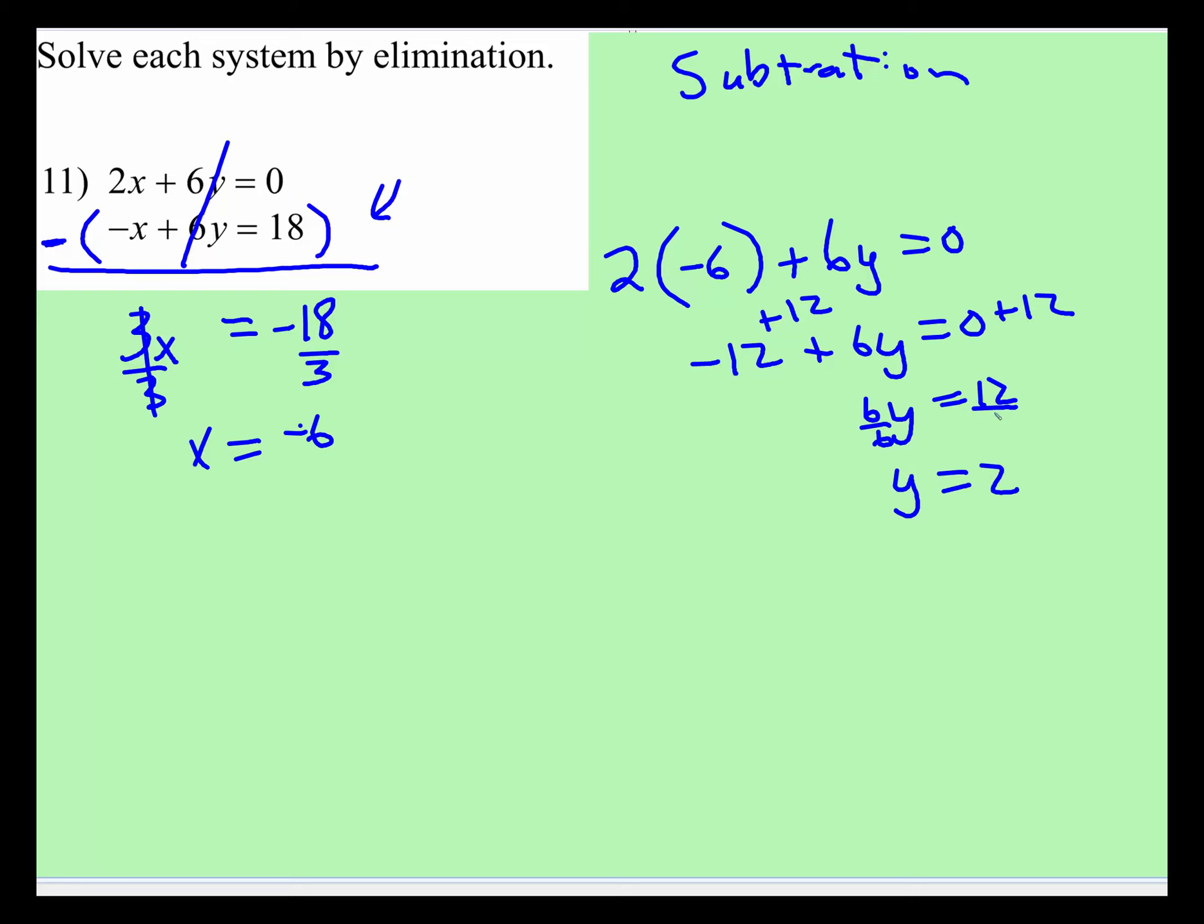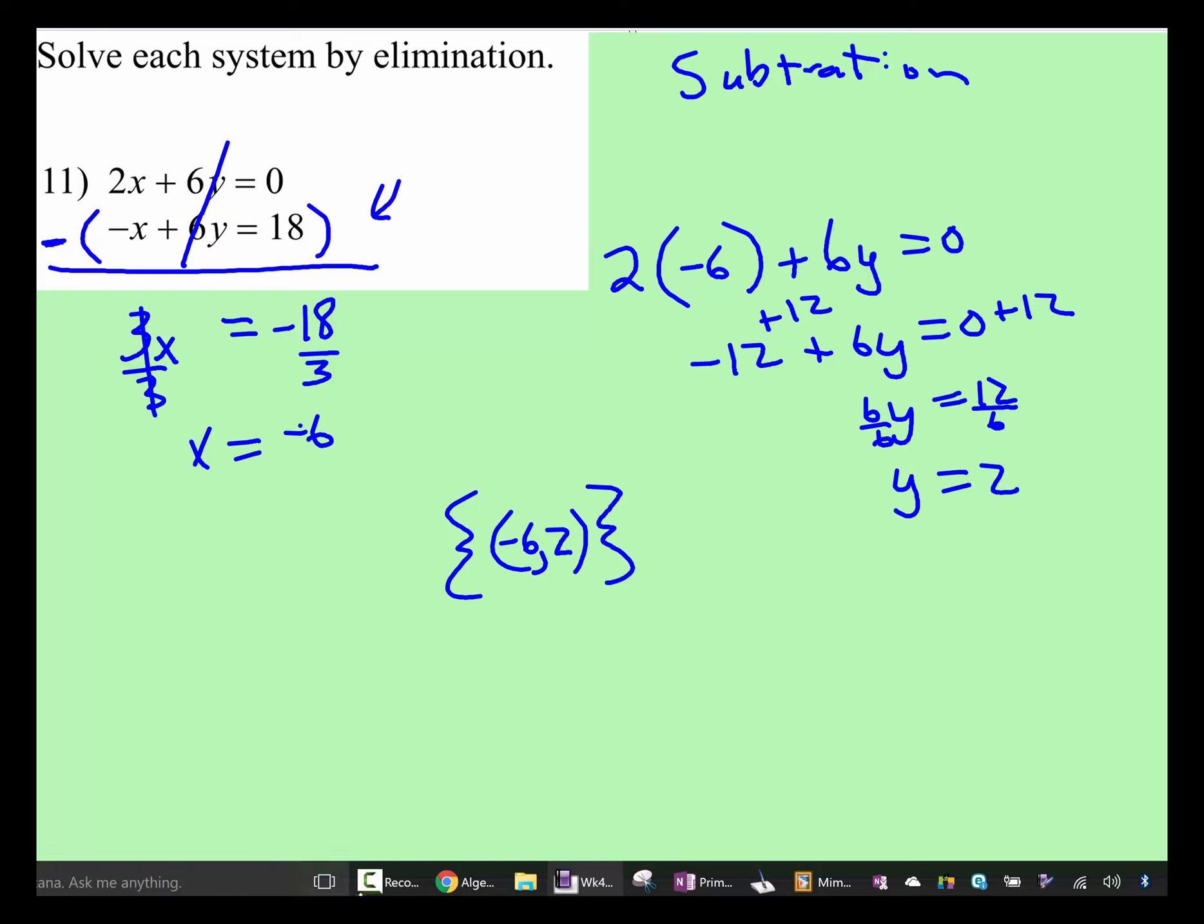Here I'll even show the divide by 6. So our solution set, put it in the funny brackets. We have the coordinate point, x is negative 6, y is 2. And that's it to solving systems of equations, the elimination method using subtraction.